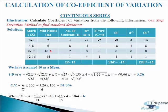Now we calculate standard deviation using the step deviation formula, putting in the values to get 3.26 as standard deviation. Now we calculate CV, coefficient of variation. First we calculate mean: A plus sigma FD dash divided by sigma F, multiplied by C. We put in the values and get 6 as mean. Coefficient of variation equals standard deviation divided by mean multiplied by 100: 3.26 divided by 6 multiplied by 100 gives 54.3%. This is how we calculate coefficient of variation in continuous series using the step deviation method.